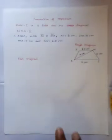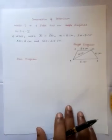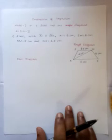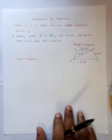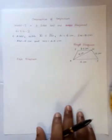Hi students. This is the first model of construction of trapezium. In the first model, we are given three sides and one diagonal.